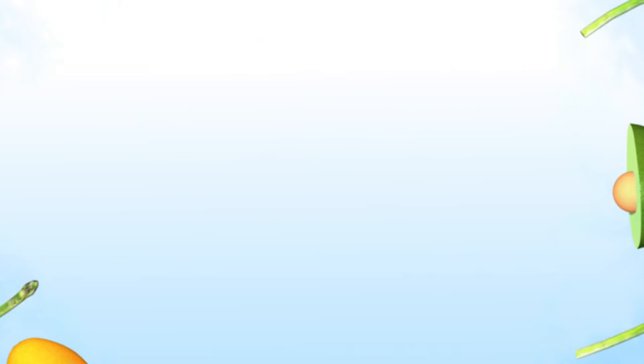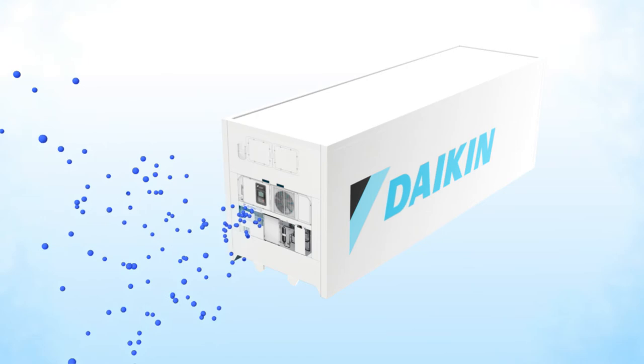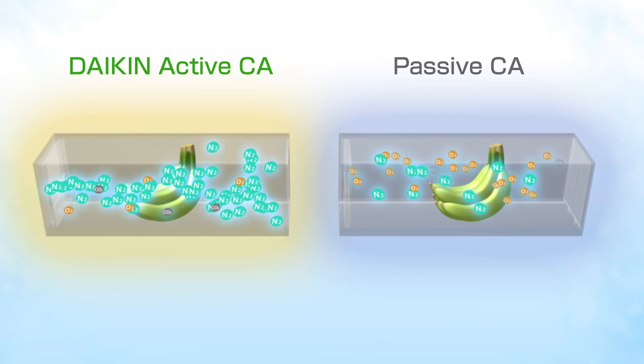Daikin Active CA is here to protect cargoes and make it possible for more products to be transported safely by sea. Adapted from Daikin's oxygen concentrator, which was developed for medical usages, Daikin Active CA creates a nitrogen-rich gas from the outside air and supplies it into the container, rapidly reducing the inside oxygen concentration to its optimum level.